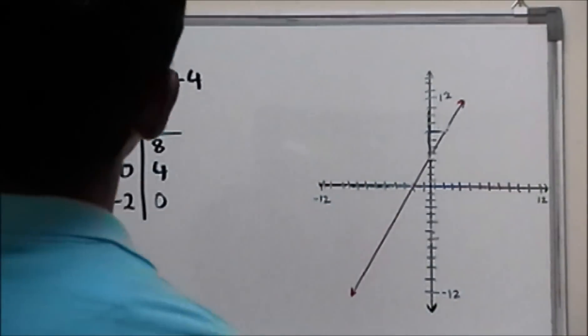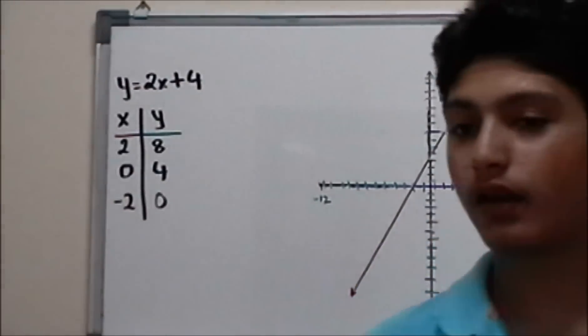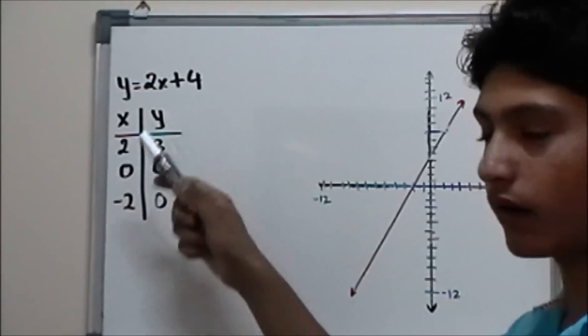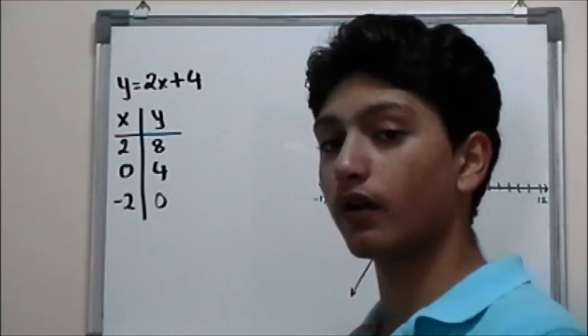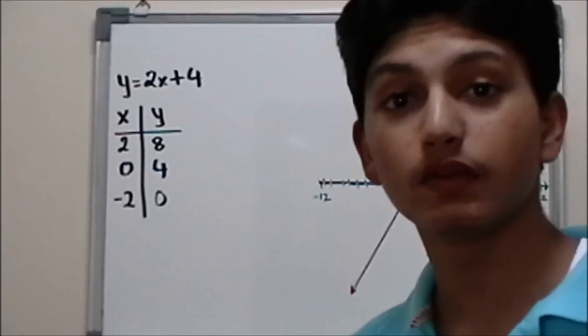The graph of a linear equation is a straight line. Now the equation that we have already talked about is this one. It says y equals 2x plus 4. That equation we have used in previous videos.